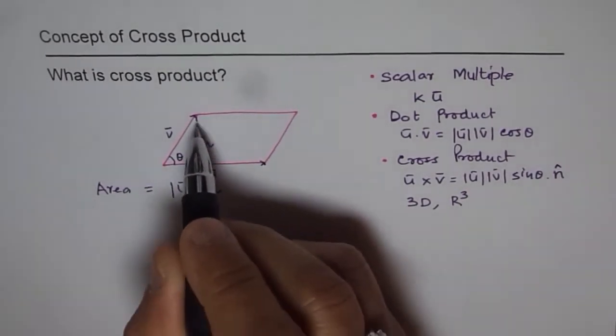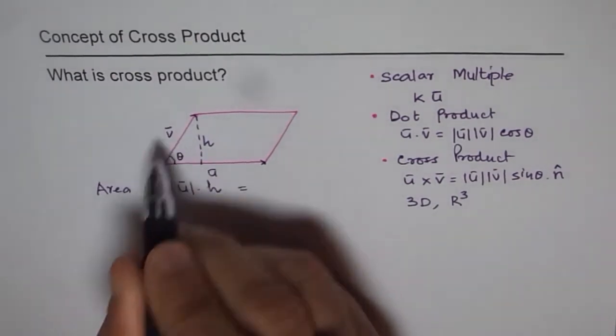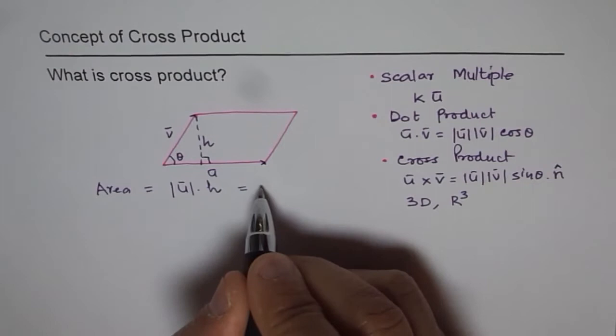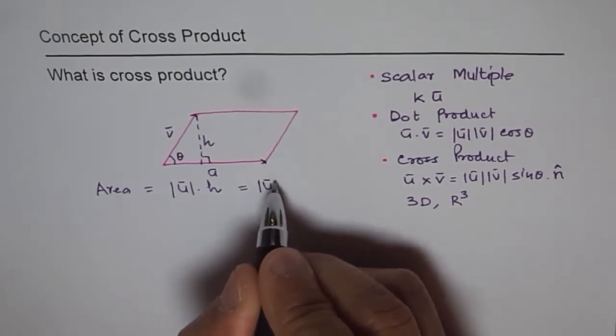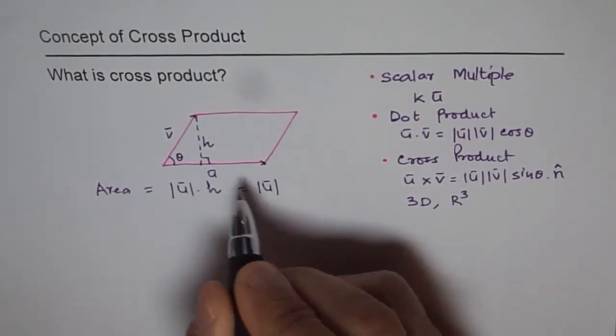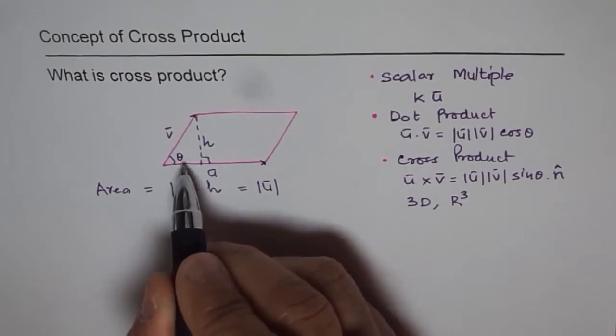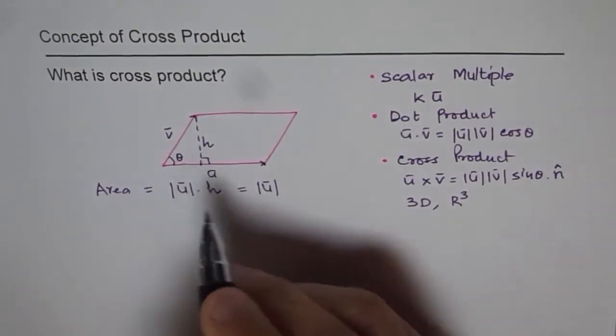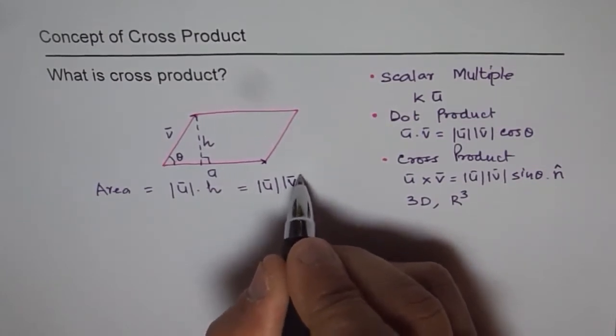Area of a parallelogram is equal to magnitude of base which is vector U times height. What is height? I can write height in terms of vector V, the hypotenuse. This is right angles. So it is magnitude of U which is the base. And height is, since this is opposite to angle theta and that's the hypotenuse, height can be written as V sin theta.